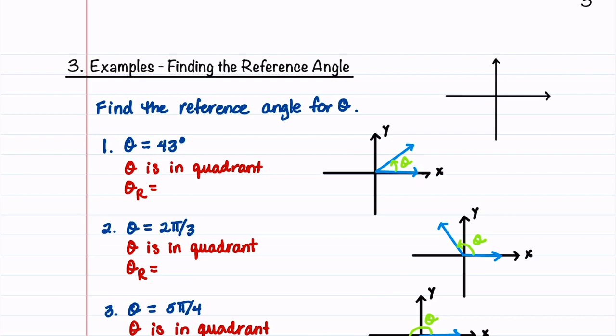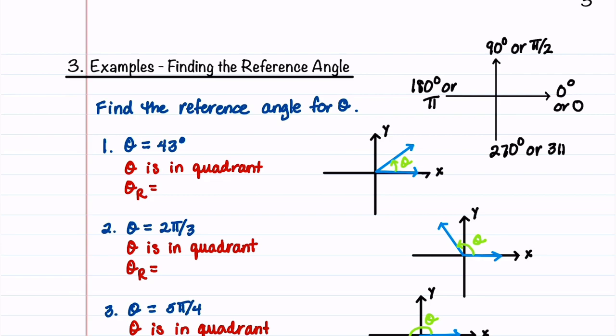Let's now work through some examples where we're asked to find a reference angle. First, let's make a chart of our quadrants and fill in the angles in degrees. On our right-hand side we have 0 degrees or 0 radians, at the top 90 degrees or pi over 2, on the left-hand side 180 degrees or pi, and at the bottom 270 degrees or 3 pi over 2. This chart will help us locate what quadrant our angle is in.